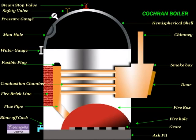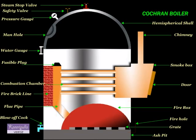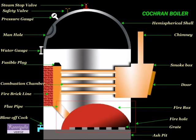Shell: It is cylindrical in shape with a hemispherical dome-shaped top where space is provided for the steam. Fire box, otherwise called as furnace: coal is fed into the fire box through the charging door. It has a dome-shaped top so that the gases get deflected and pass through the flue pipe to the combustion chamber.